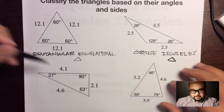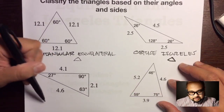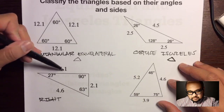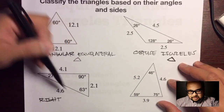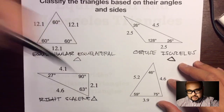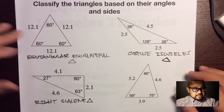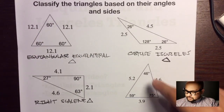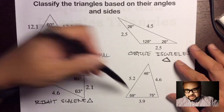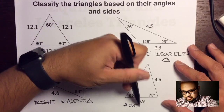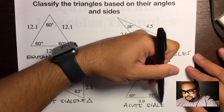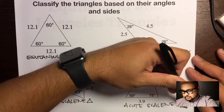This triangle has one 90-degree angle, so it's a right triangle. The sides are 4.1, 2.1, and 4.6 — no sides are congruent — making it a right scalene triangle. The last triangle has angles of 46°, 59°, and 75° — all less than 90° — so it's acute. With sides 5.2, 3.9, and 4.6, no sides are congruent, making it an acute scalene triangle.